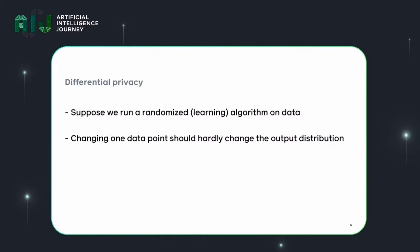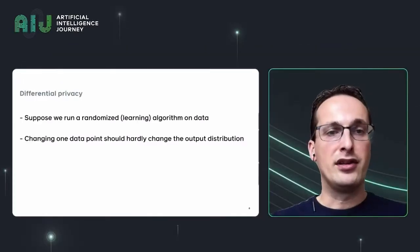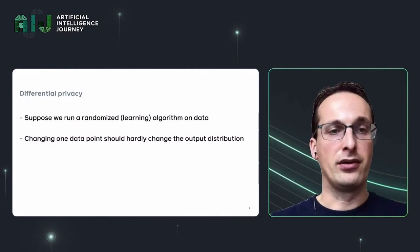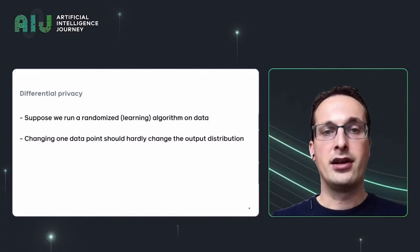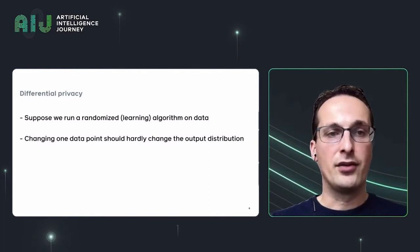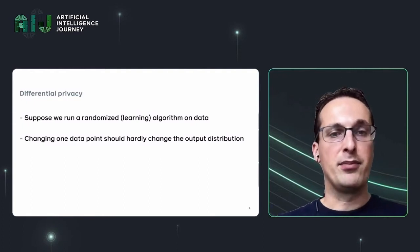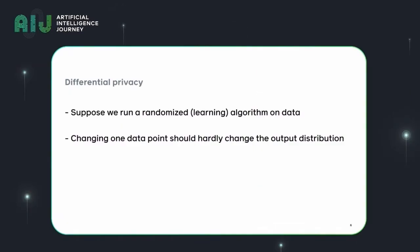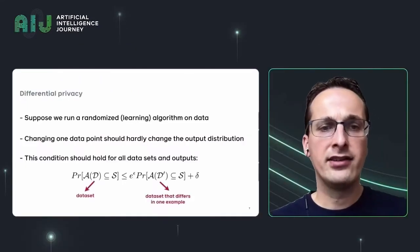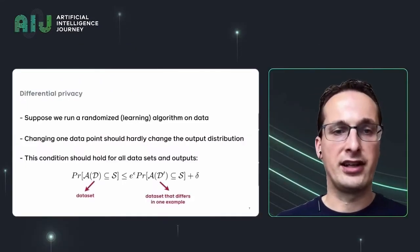Before we get started, I should tell you a little bit about differential privacy, which is the measure of privacy we use throughout this talk. Differential privacy works as follows: suppose we run a randomized learning algorithm on data. What differential privacy says is that changing one data point in that dataset should hardly change the output distribution of the randomized learning algorithm.